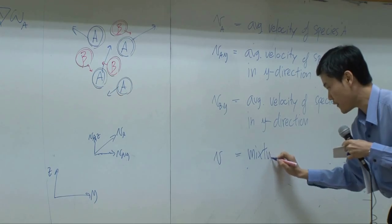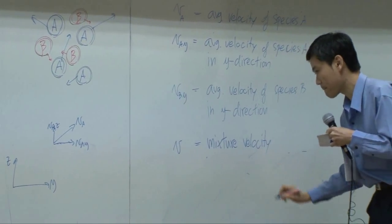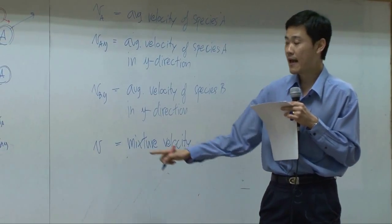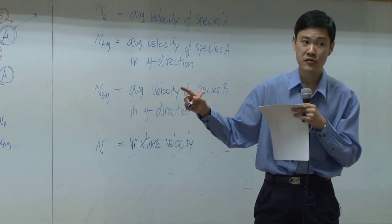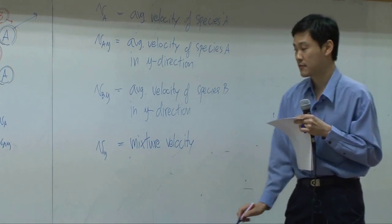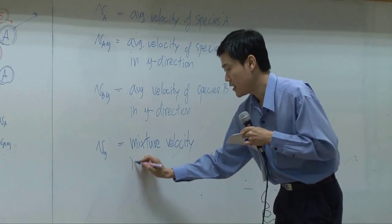So this is mixture velocity. I use V. You can have mixture velocity in any direction. So, of course, you can take them into X, Y, and Z direction. So, VY is called mixture velocity in Y direction.